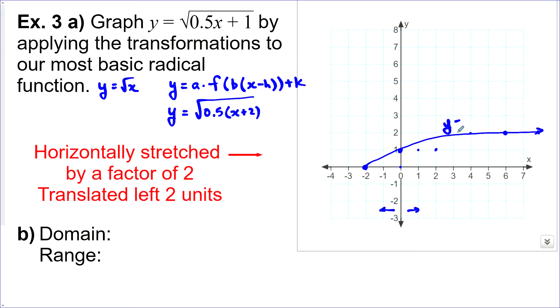So, our new transformed graph looks like that. y equals the square root of 0.5x plus 1. And you can write this one here, where it's factored out, or you can write this here. Now, our domain, we would say negative 2 to infinity. And our range, 0 to infinity.